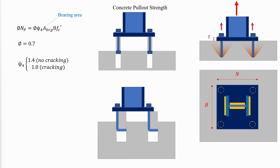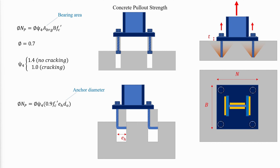Hooked anchor rods can fail by straightening and pulling out of the concrete. A hook is generally not capable of developing the required tensile strength. Therefore, hooks should only be used when tension in the anchor rod is small. The pull-out strength in the case of hooked anchor rods is calculated accordingly.